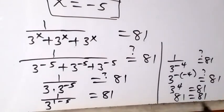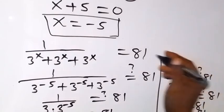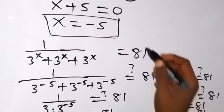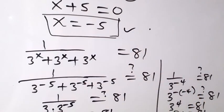Therefore, since the left hand side equals the right hand side, we can conclude that x equals minus 5 is the solution to this problem. Thank you for watching. Don't forget to subscribe to this channel for more of our videos. See you in the next class, bye for now.